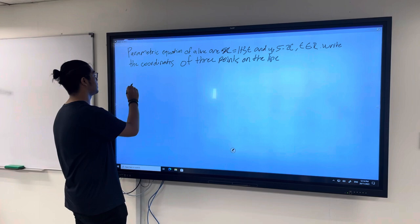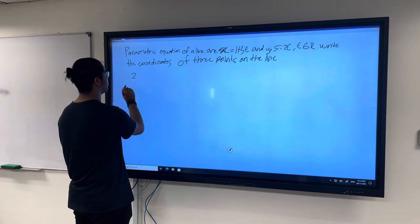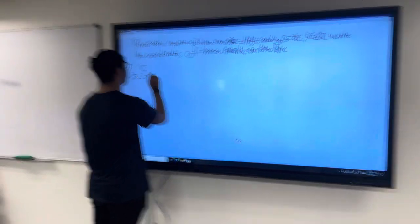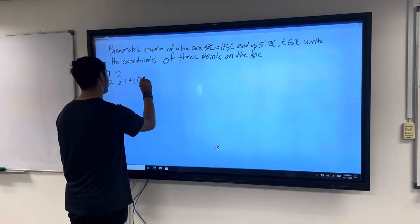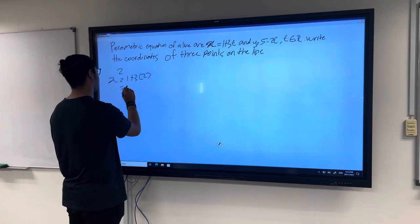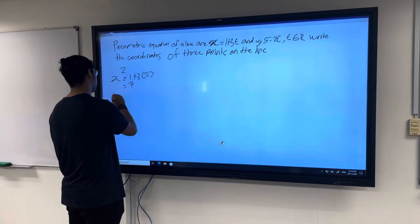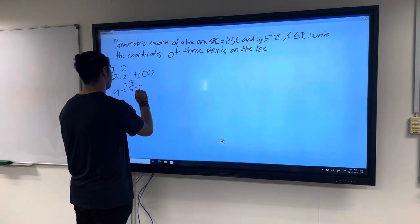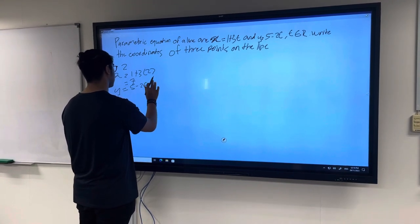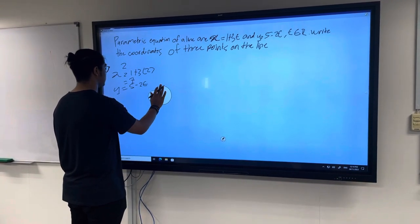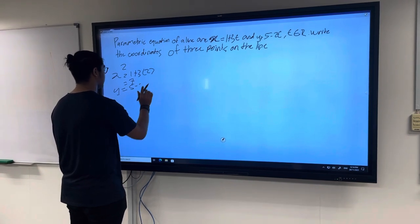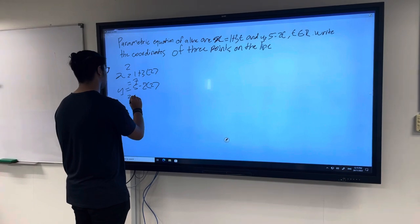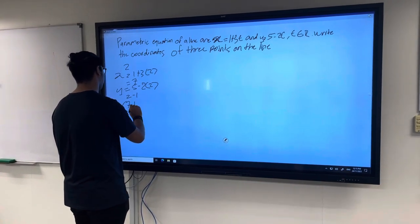The first one I'll be using is 2. So substitute 2 into t. x equals 1 plus 3 times 2, equals 7. y equals 5 minus 2 times 2, equals negative 1. So the point will be (7, -1).